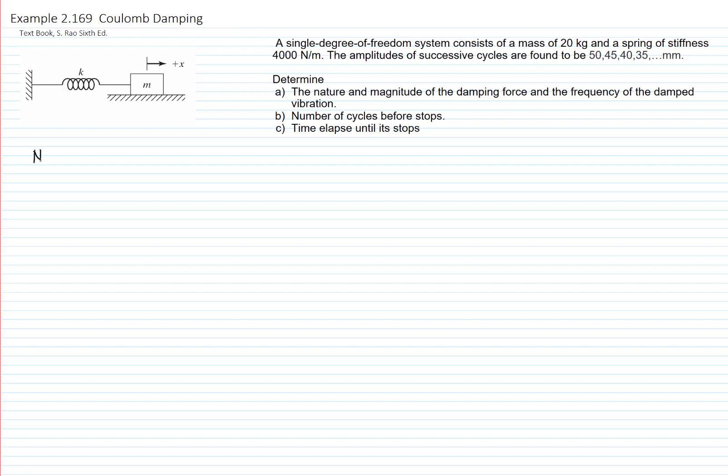The first thing we will analyze is the nature of the damping. We analyze how the amplitude decreases. So we see that here we have the initial amplitude is 50 millimeters, then 45, 40, and 35 in each cycle respectively.